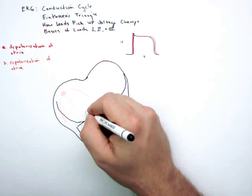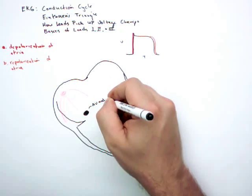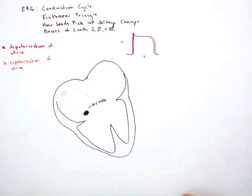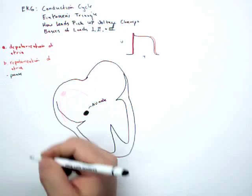The next step is there's going to be a little pause in the AV node. The reason for that pause is it allows the atria to contract completely to fill the ventricles before the ventricles contract. So we'll just put that as a pause.